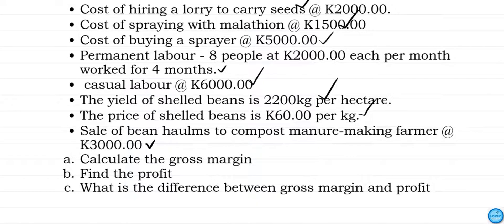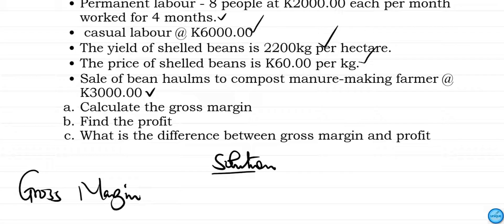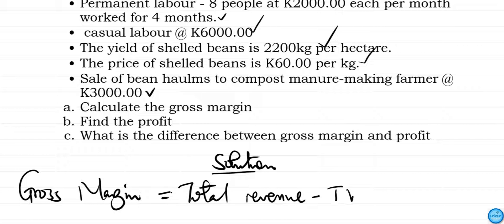We've been asked to find the gross margin, the profit, and the difference between gross margin and profit. Gross margin is equal to total revenue minus total variable cost. Total revenue is like total income, so we need to find the total income from the beans. The difference between the two gives us the gross margin.